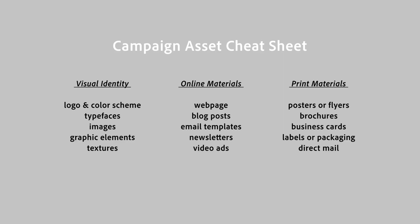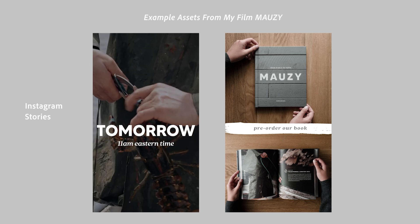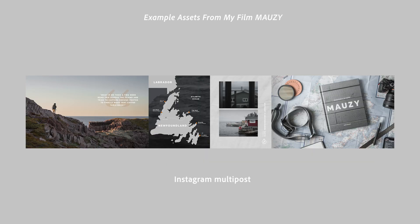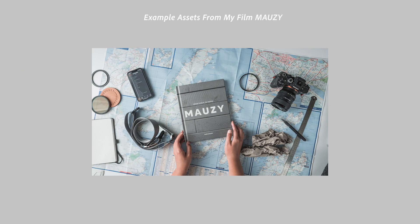The assets that you create for your campaign really depend on your marketing goals and where your audience is. This is a little bit of a guide to give you an idea of what kind of assets you may need to make. Here is an example of some marketing materials that I created for a film that I made, including graphics for YouTube and Instagram, as well as product photos used on my website and in my email marketing materials.